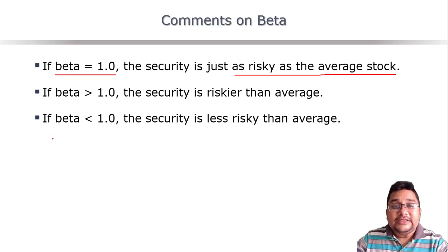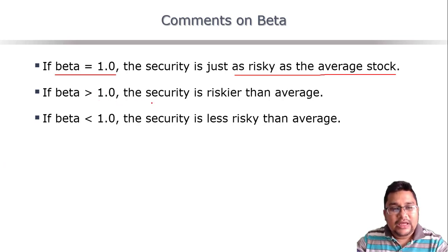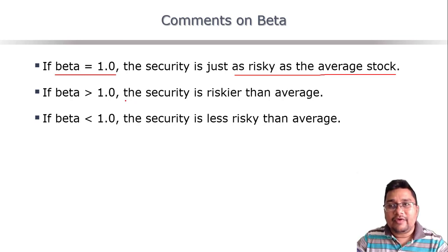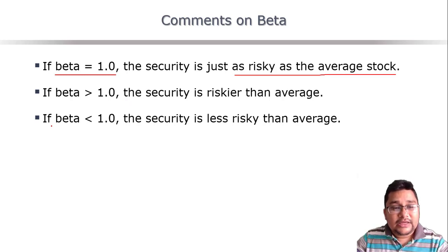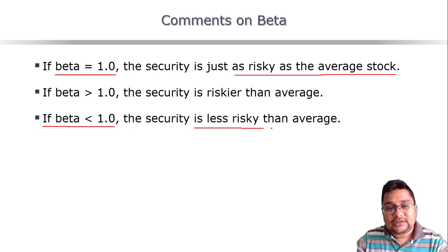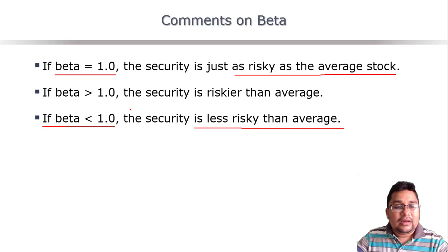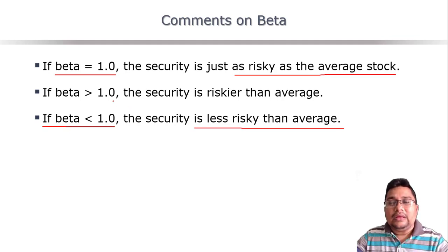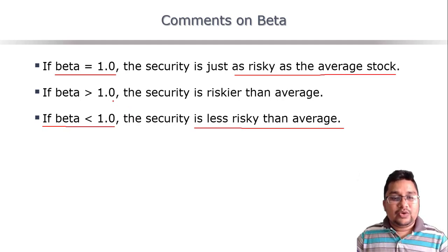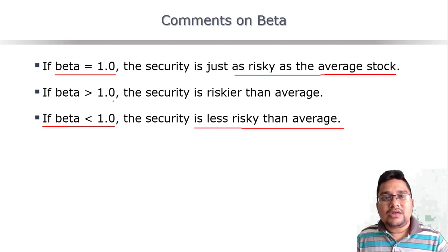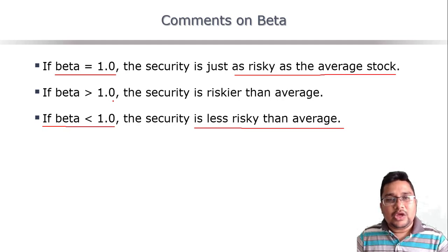If beta is greater than 1, the security is riskier than average — it has greater variability compared to the market's average variability. If beta is less than 1, the security is less risky than average. So the value of beta indicates whether a particular security is more risky, less risky, or equally risky compared to the overall market.